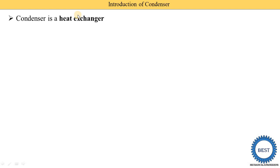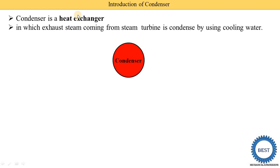Here we are discussing the condenser for power plant engineering. In a heat exchanger, condensation is going on — that's why it is called a condenser. In the condenser, we supply exhaust steam from a turbine and convert it into water. For that, we need to supply another medium — as per the definition of heat exchangers — and that other medium is cooling water.